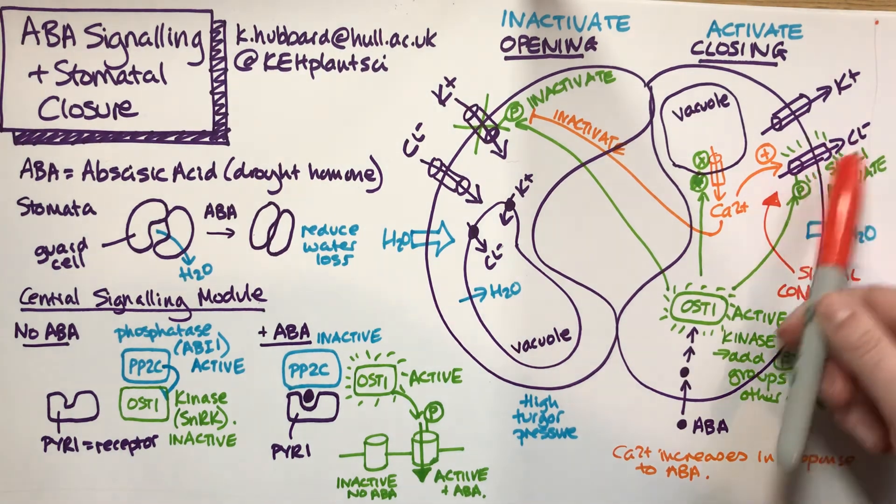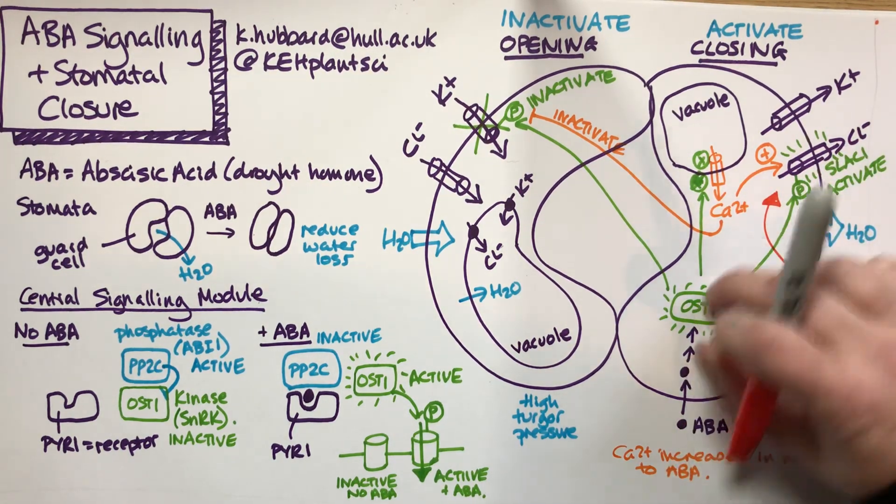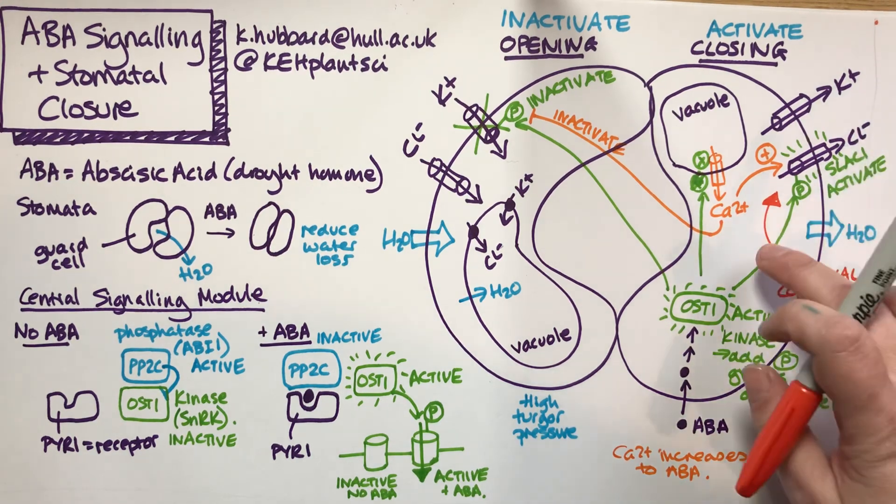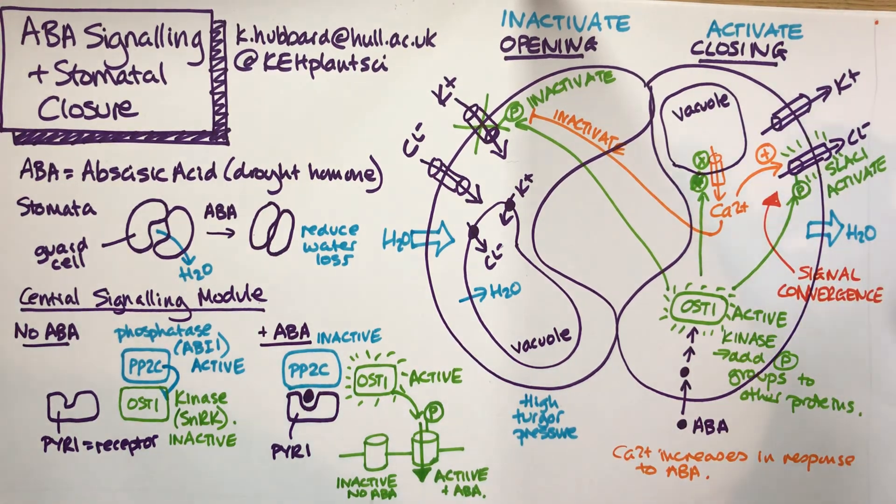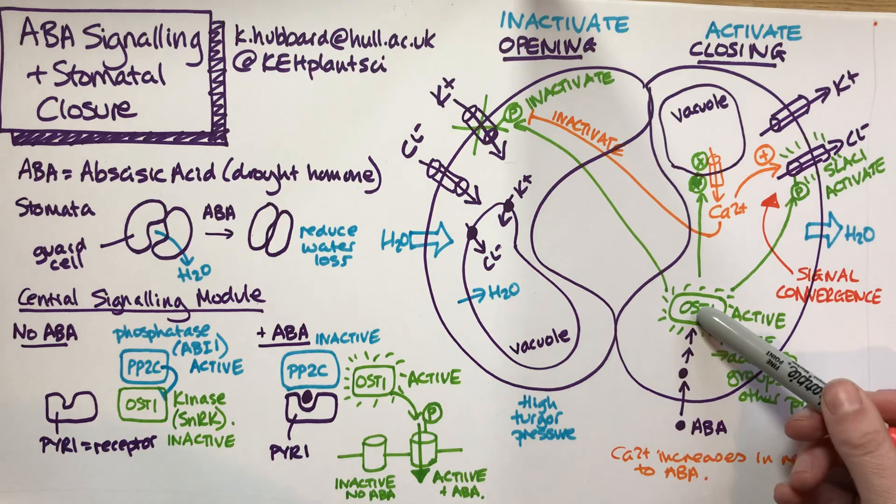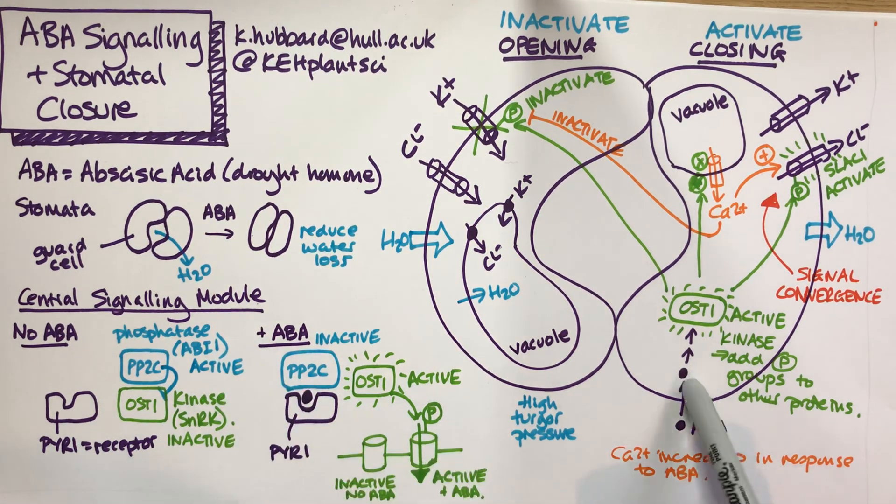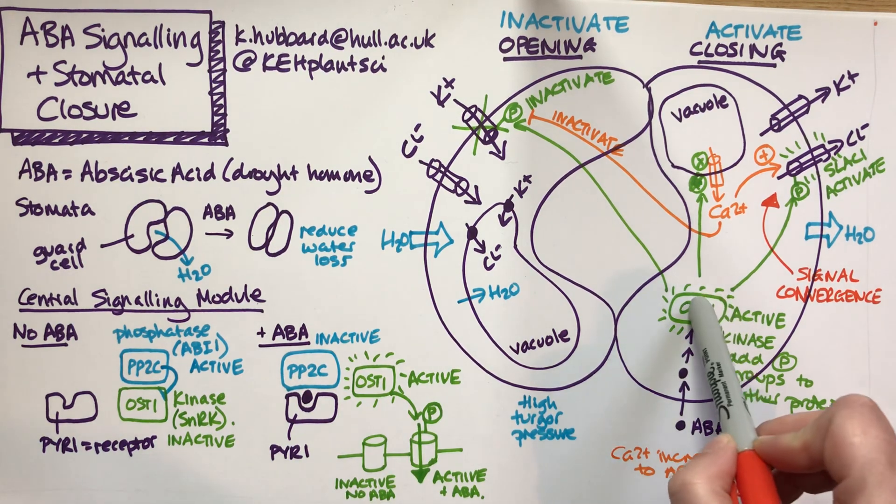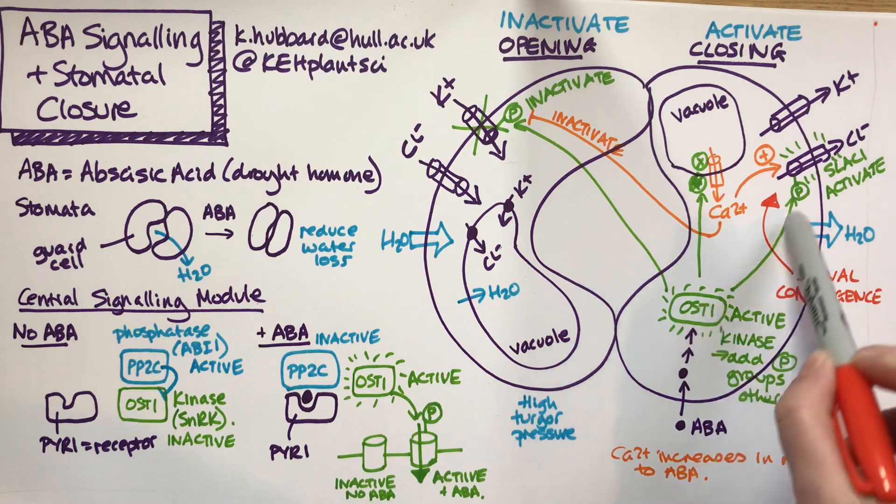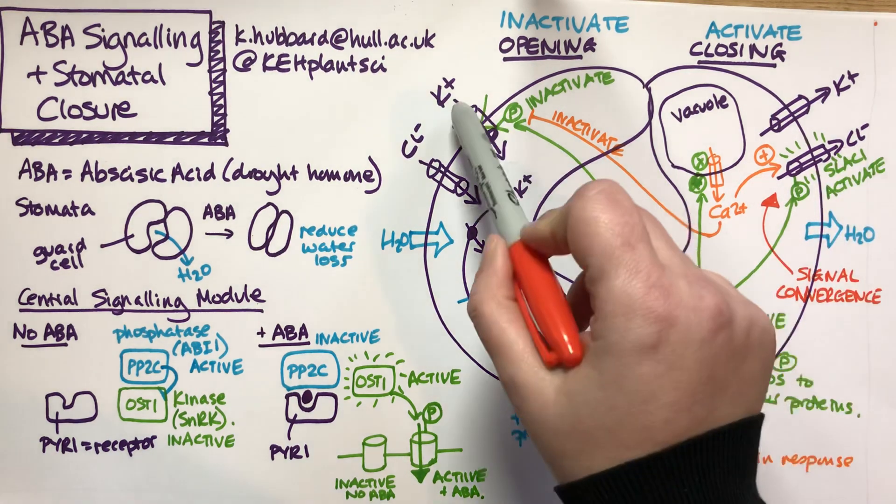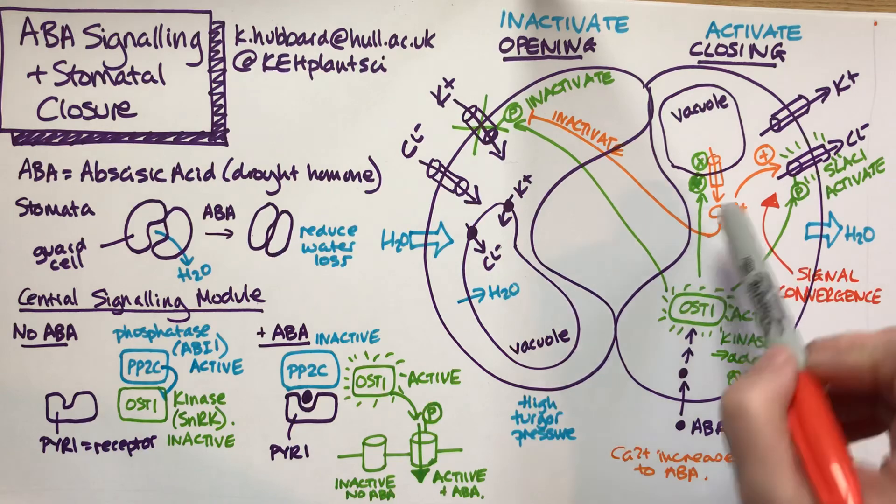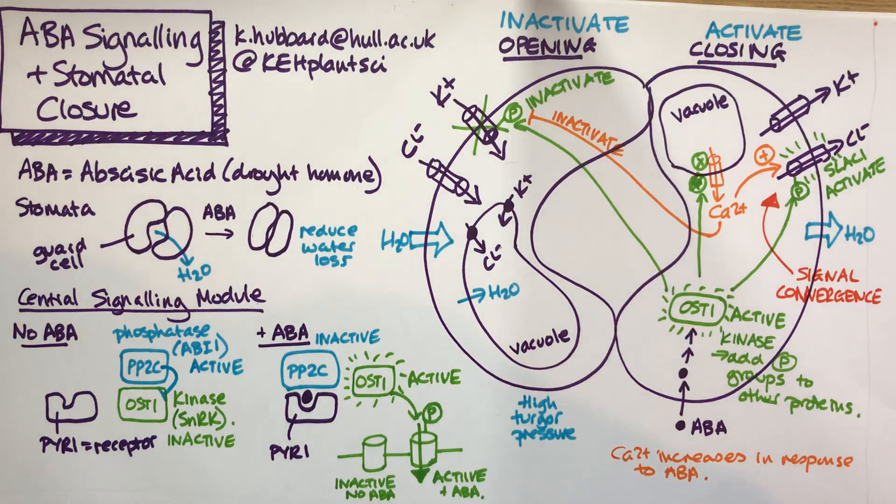As we activate the chloride channel, we start to get chloride moving out of the cell, and the more chloride that moves out, the more water moves out. Overall that will close the guard cell. The central signaling module: ABA doesn't directly interact with OST1; it goes via this PYL1-PP2C-OST route. Once we've got OST1, that can activate the closing processes and inactivate the opening processes, and we also have calcium doing the same thing for good measure.